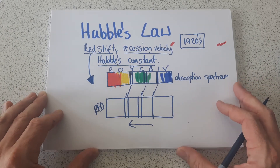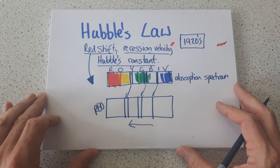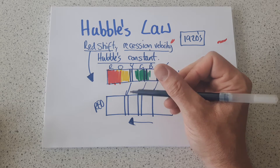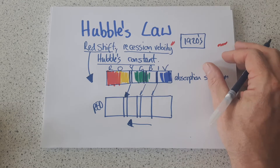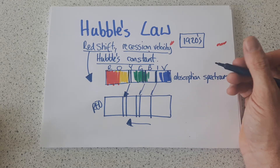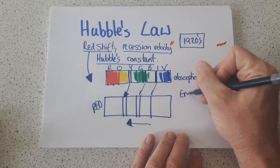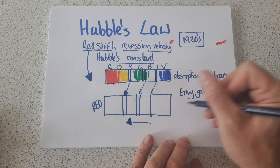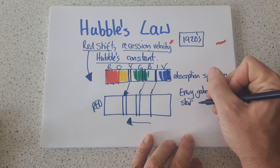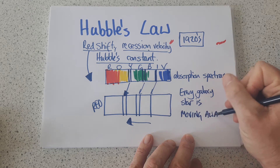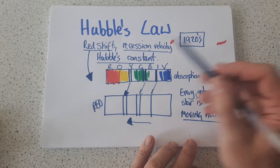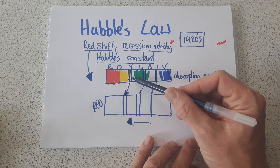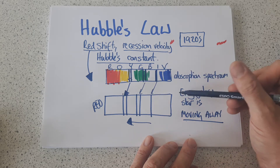There are separate videos on the reasons for this, but essentially if the spectral lines have moved towards the red end of the spectrum, then the Doppler effect would state that the object which is giving out that light must be moving away from the observer. So what Hubble found was that every single galaxy — apart from one — was red shifted, meaning every galaxy and every star is actually moving away from us.